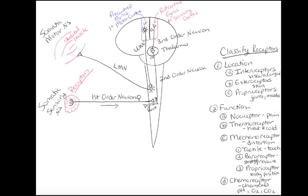First we're going to talk about the sensory somatic nervous system — that's sensory information coming in. Sensory information travels through a unipolar neuron. We have little dendrites out here, the long axon going into the spinal cord, the synaptic terminal, and then the cell body hangs off to the side. That's a unipolar, sensory neuron.